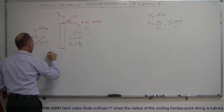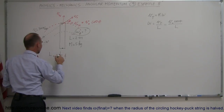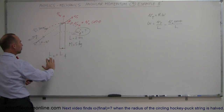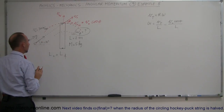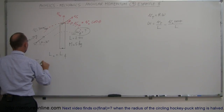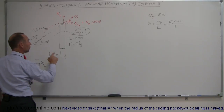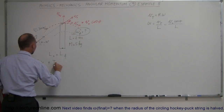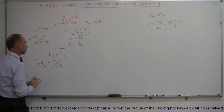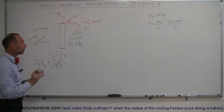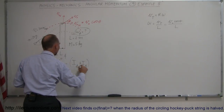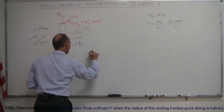Now we write the conservation equation: L-initial equals L-final. Since the beam was not moving initially — think of this as a bird's-eye view, horizontal on a table with no gravity — L-initial equals the moment of inertia of the bullet times the initial angular velocity of the bullet, using that equation, plus the moment of inertia of the beam times the initial angular velocity of the beam. That beam term equals zero, so it drops out. Since the bullet sticks in the beam, L-final equals the combined moment of inertia of the bullet plus the beam times omega-final, which is what we're solving for.